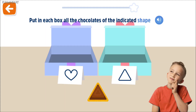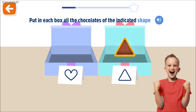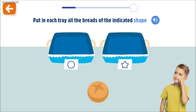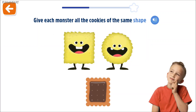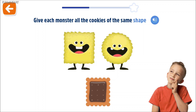Put in each box all the chocolates of the indicated shape. Cool! Put in each tray all the reds of the indicated shape. Yes! Give each monster all the cookies of the same shape.